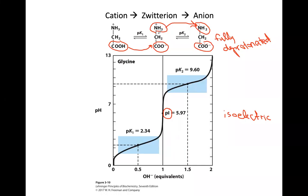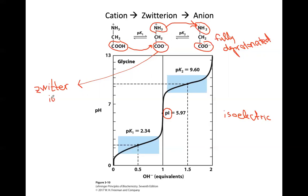Also, remember the term zwitterion — that's what this state is called. Zwitterion comes from German and means 'double.' It has both a positive charge and a negative charge simultaneously.